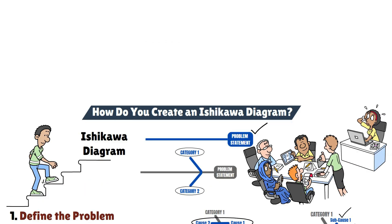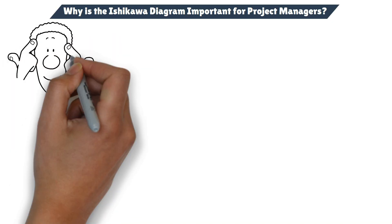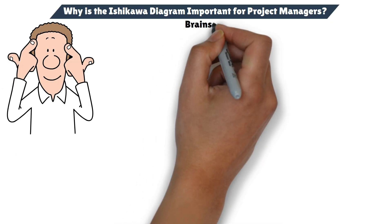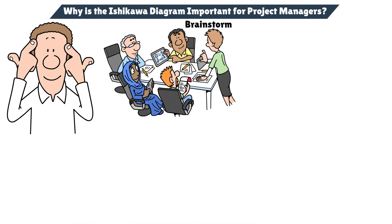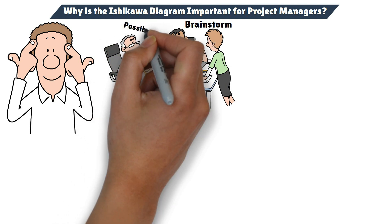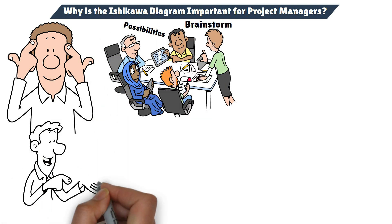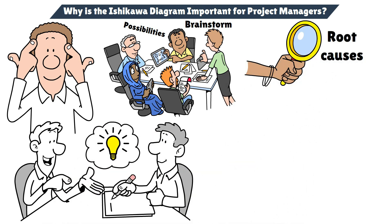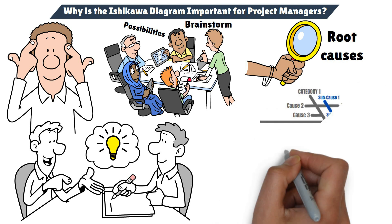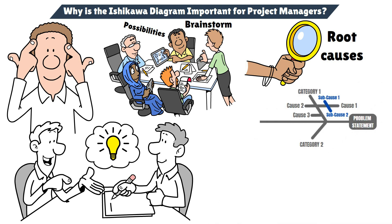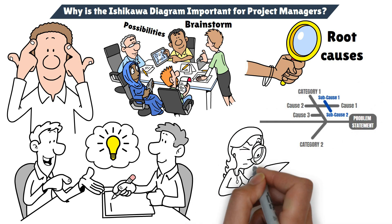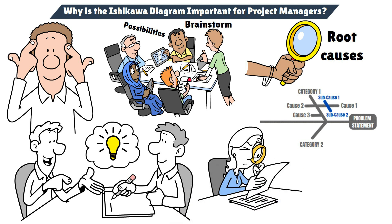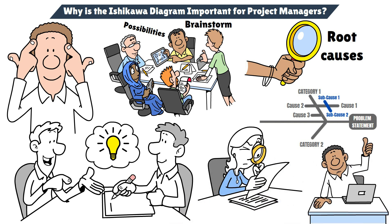As a project manager, your role in this process is crucial. Not only do you need to facilitate the brainstorming session, but you also need to ensure that the team considers a wide range of possibilities. Encouraging collaboration and different perspectives will lead to a more thorough analysis. Once the root causes have been identified, it's up to you to interpret the diagram and develop strategies to eliminate or mitigate the identified causes. This kind of structured problem solving is a key skill for any successful project manager.